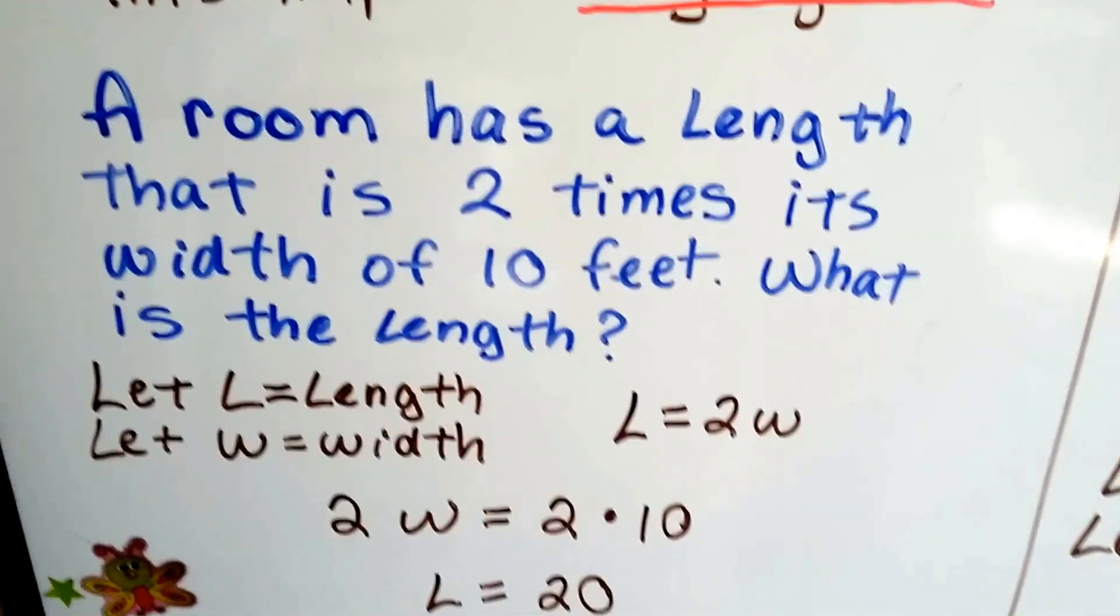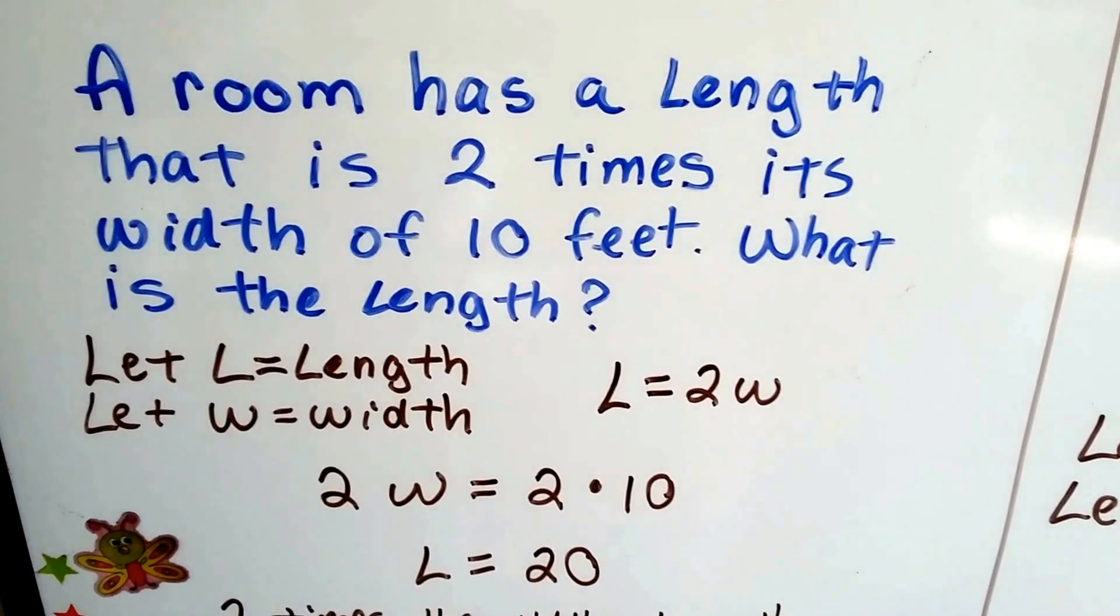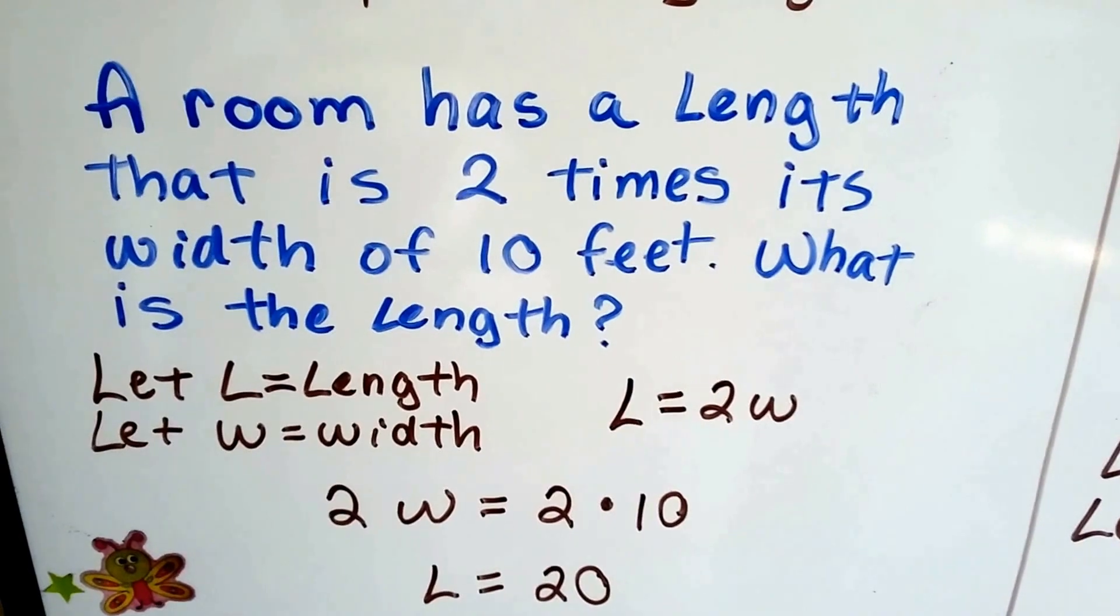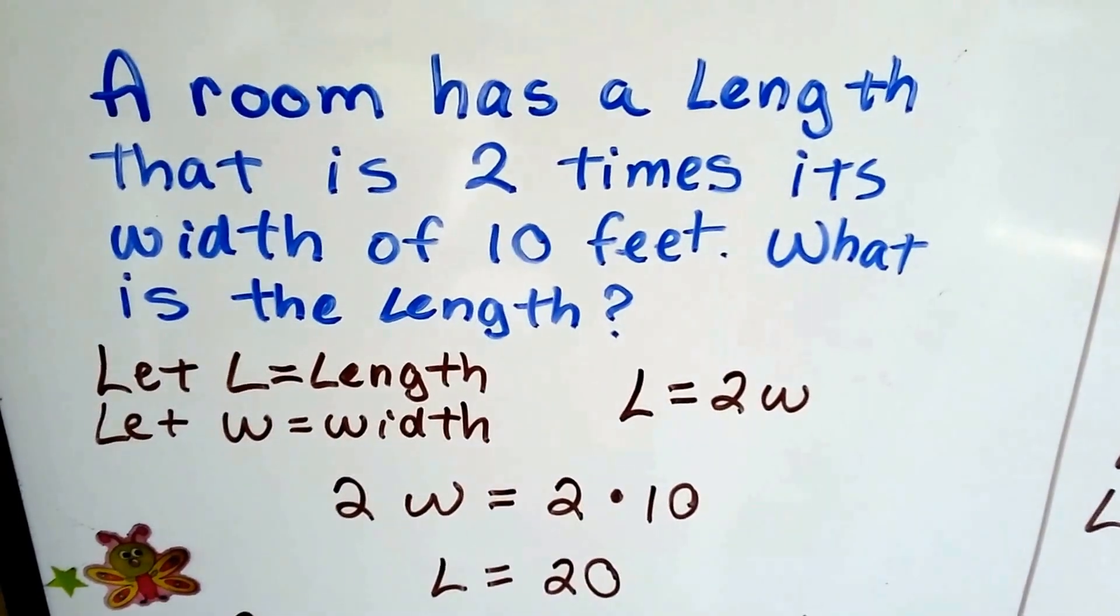Let's take a look at this. A room has a length that is 2 times its width of 10 feet. What is the length? Well, the width is 10 feet. And it says that the room has a length that's 2 times that.